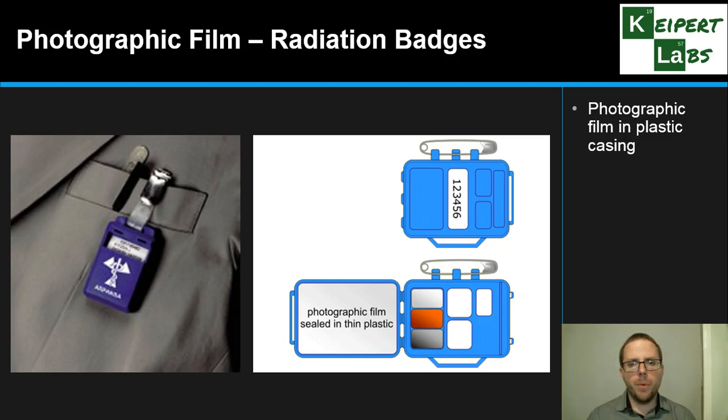It's got some photographic film encased in plastic. You might remember from when we first started talking about radioactivity that photographic film was the way that they first identified radioactivity in the first place. It darkens when it's exposed to different types of radiation. This is not very specific to one type of radiation, but it identifies the exposure to that energy and gradually darkens over time. Once it reaches a certain level, it indicates that the safe limit has been reached.